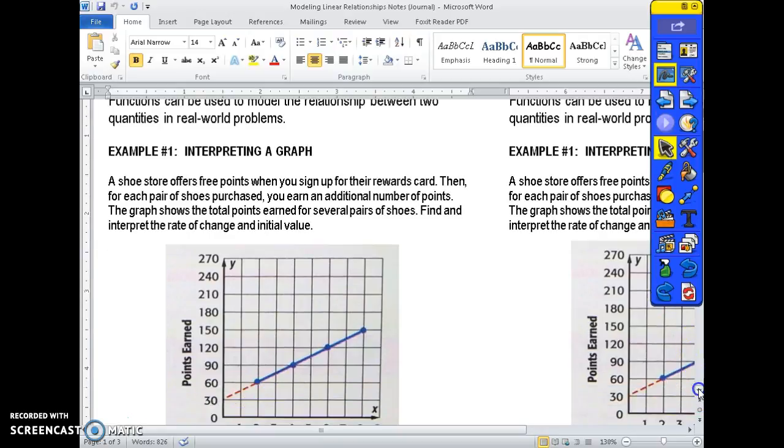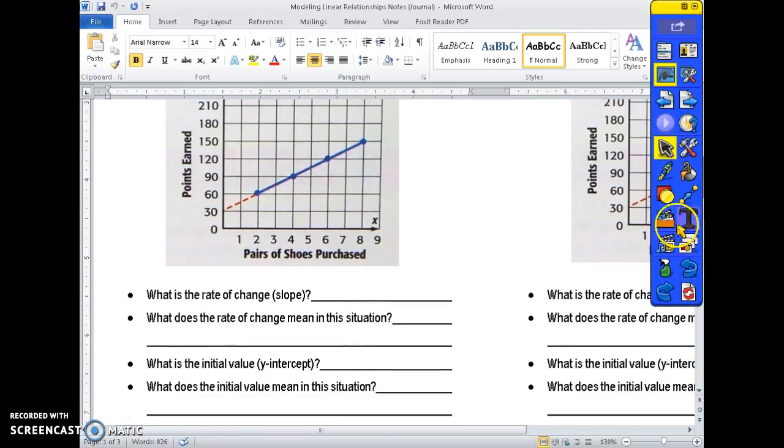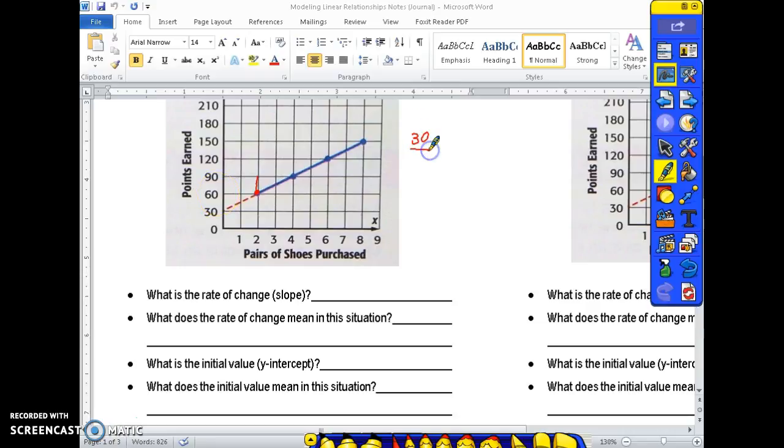We know from our previous unit that rate of change is the same thing as slope. So when you find the rate of change for this graph we are going to do our similar triangle. We start with a point from the left and slope is rise over run so we're going to rise. We went from 60 to 90 so that's up 30. And we're going to run from 2 to 4. We went over 2. 30 divided by 2 is 15.